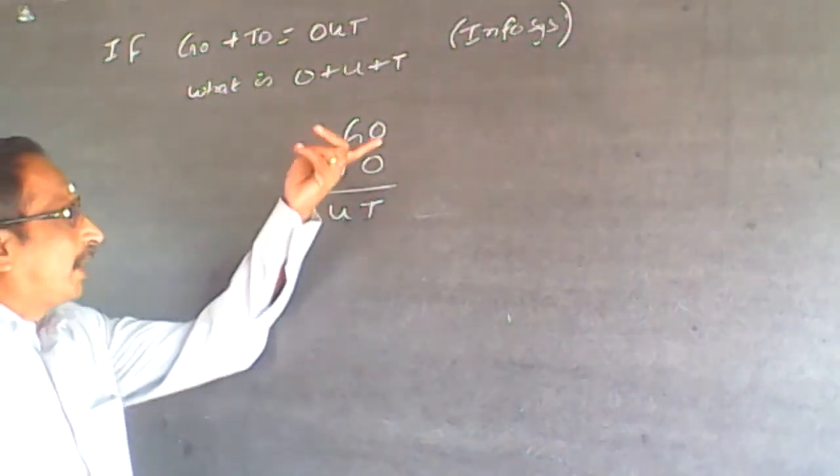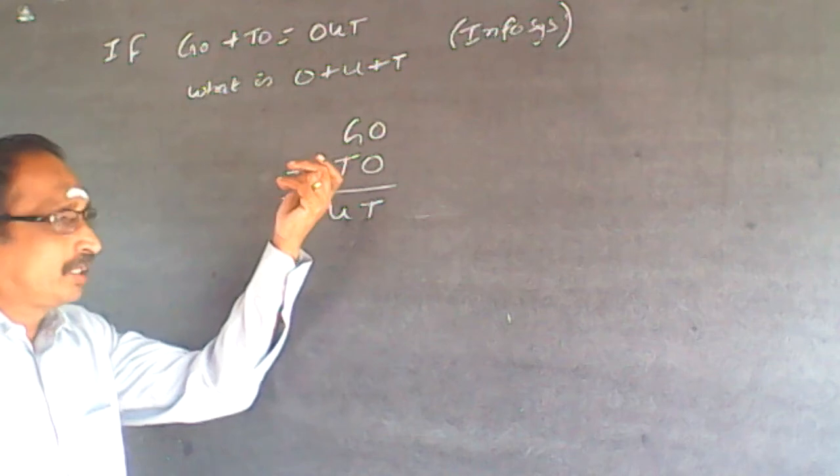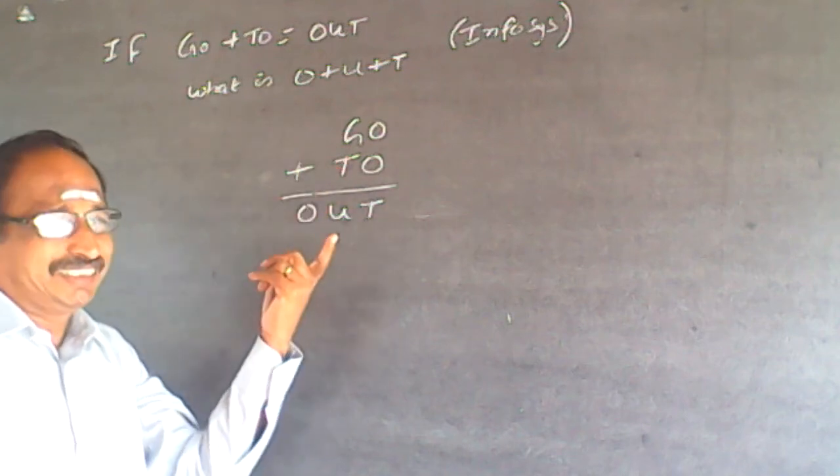Now, when I add two two-digit numbers, I am getting a three-digit number. This is the catch point.